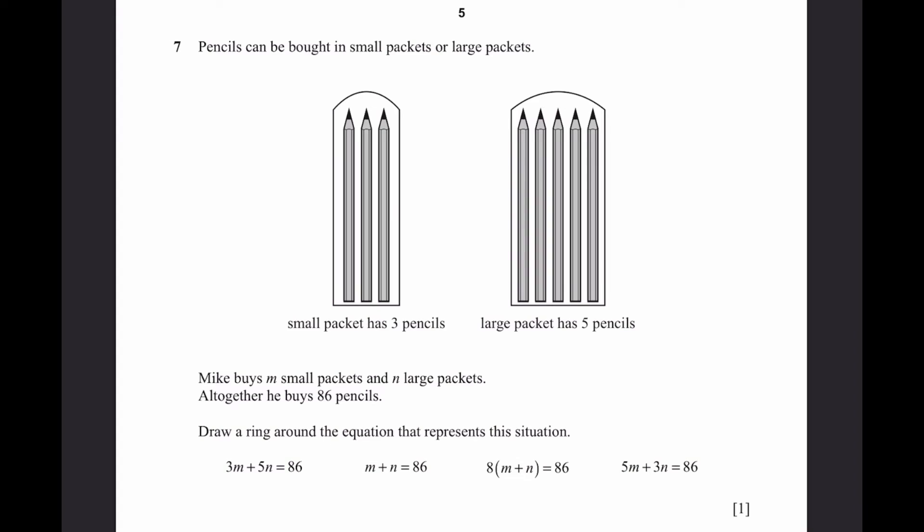Question 7. Pencils can be bought in small packets or large packets. Mike buys M small packets and N large packets. Altogether, he buys 86 pencils. Draw a ring around the equation that represents this situation. A small packet has 3 pencils, a large packet has 5. If he has M small packets, the number of pencils from small packets is M times 3, or 3M. The number from large packets is 5 multiplied by N. So 3M plus 5N is the total number of pencils, which is 86. Therefore, the first equation is correct.